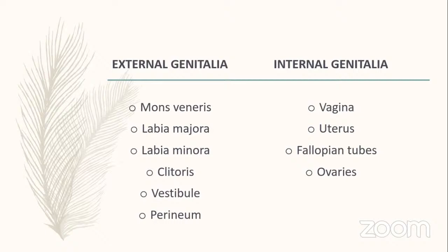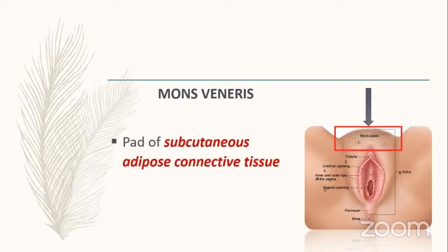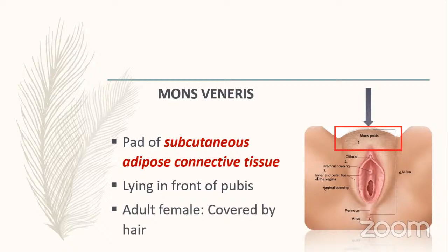Mons pubis or mons veneris is a pad of subcutaneous adipose connective tissue lying in front of the pubis. In an adult female it is covered by hair. Points highlighted in red should be noted for easy revision.